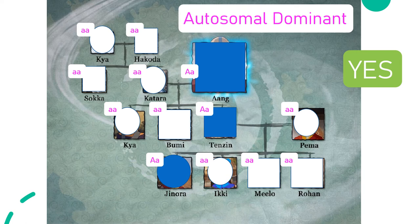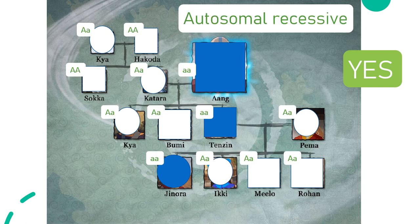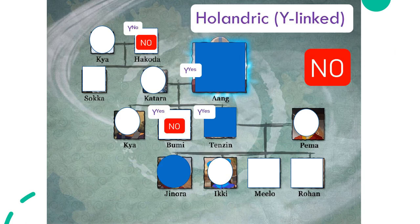Autosomal dominant also works. Autosomal recessive also works. Holandric does not work. First, Hakoda is a male so he has a Y chromosome, but he is not affected by the phenotype, the blue forehead arrow. This does not work because anyone with a Y chromosome should therefore have a blue forehead arrow. This also doesn't work for Bumi because he's not supposed to have one as well.